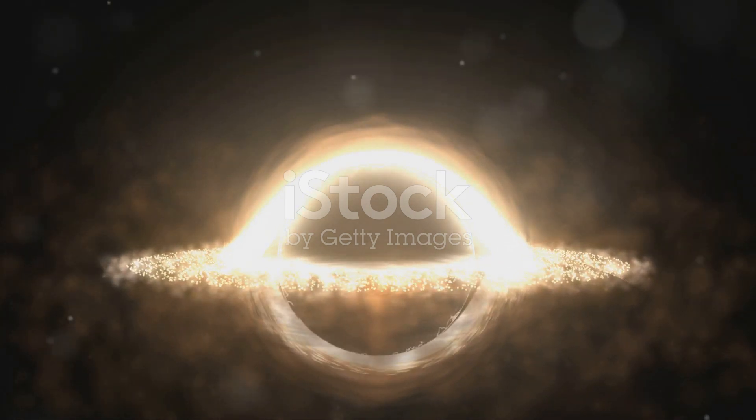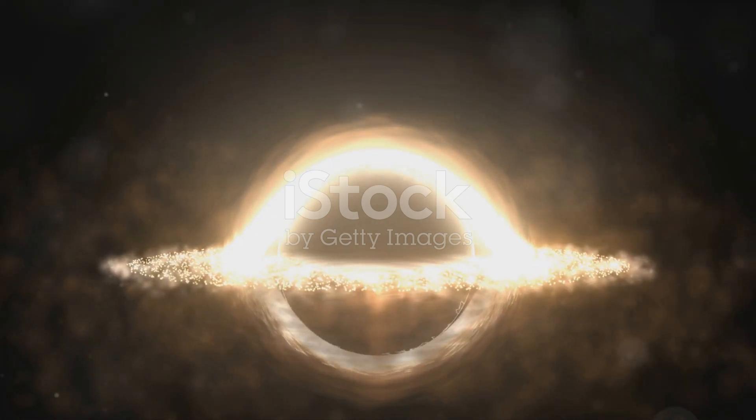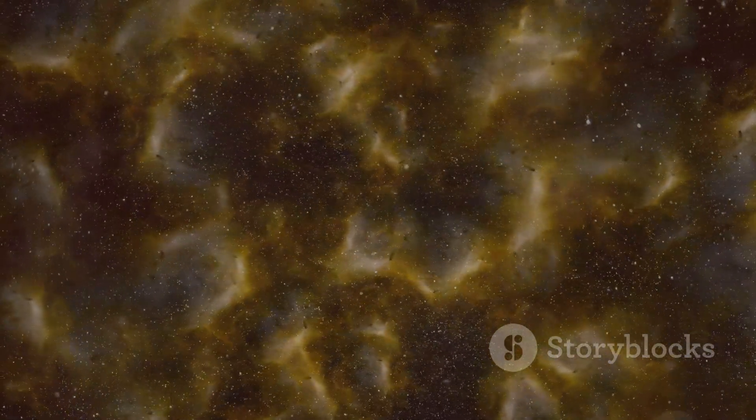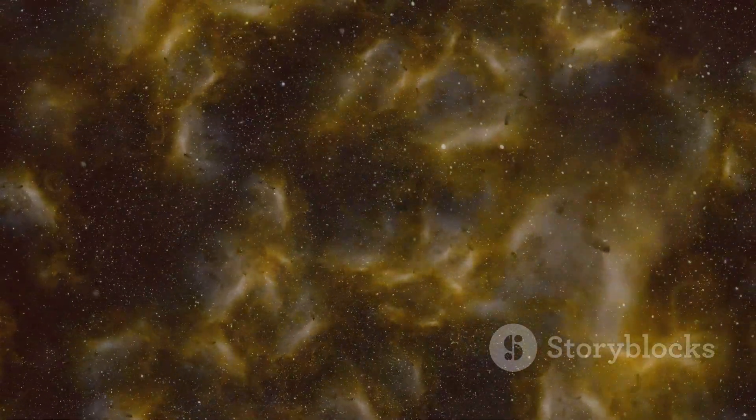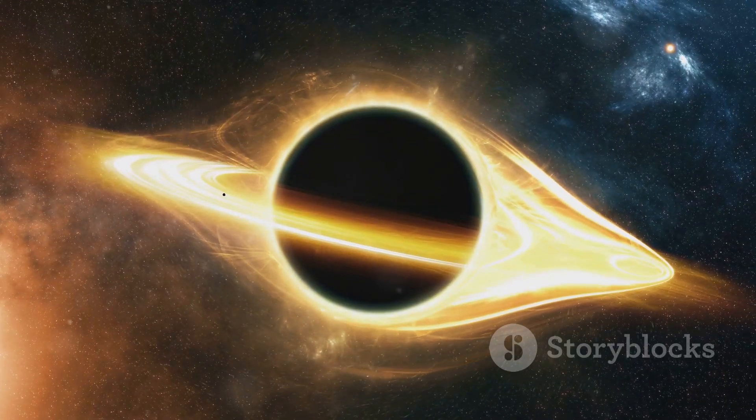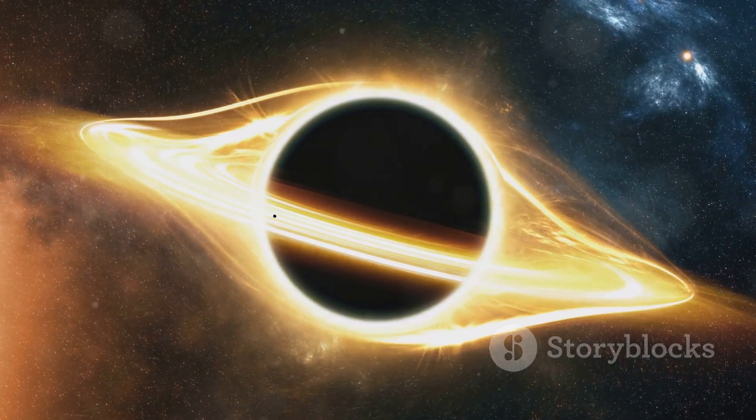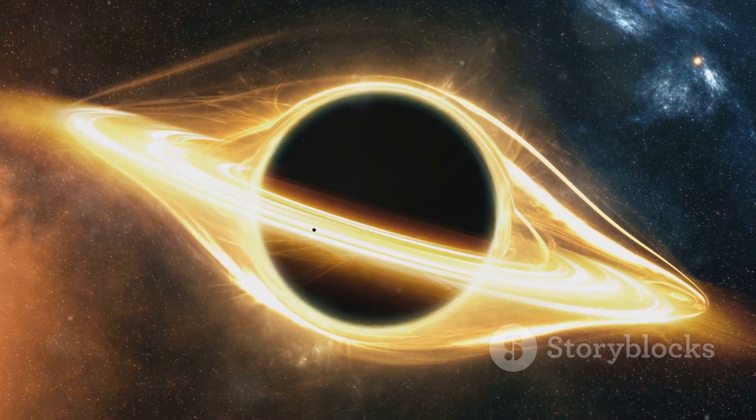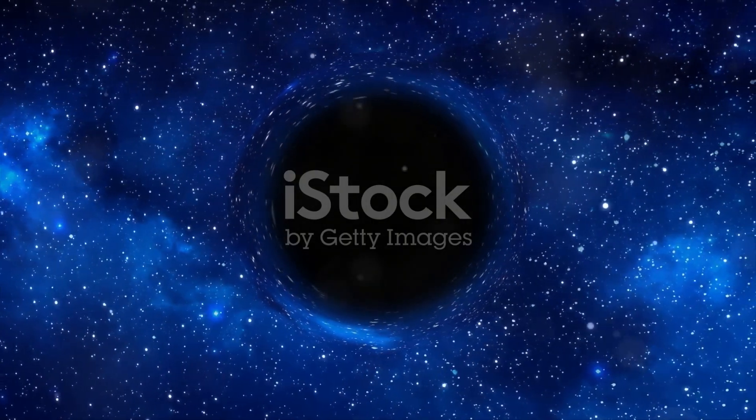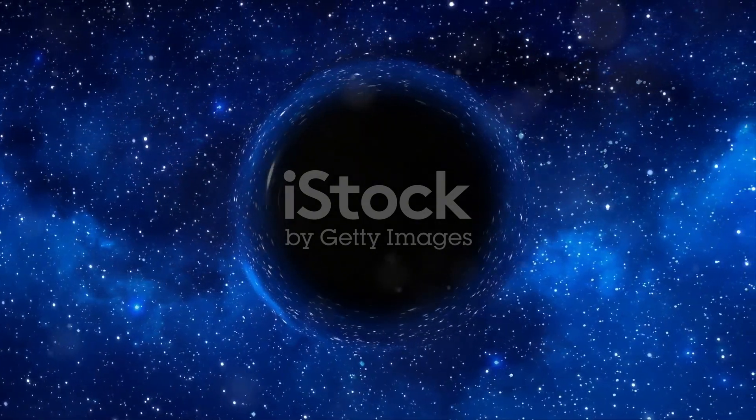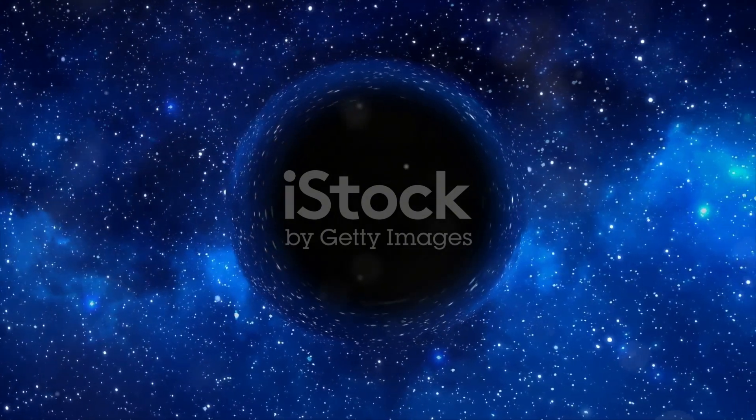So how can these ancient black holes, some tinier than an atom, be the missing dark matter? It's a fascinating question that has intrigued scientists for decades. Well, remember that dark matter doesn't emit light. It doesn't interact with electromagnetic forces, making it invisible to our telescopes and other instruments. Black holes, with their immense gravity, also trap light. This means they share a crucial characteristic with dark matter: they are both invisible to us. This shared characteristic makes primordial black holes an exciting candidate for dark matter. If these tiny black holes formed in the early universe, they could be scattered throughout space, contributing to the unseen mass we attribute to dark matter.